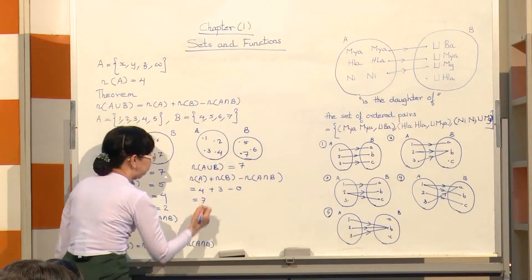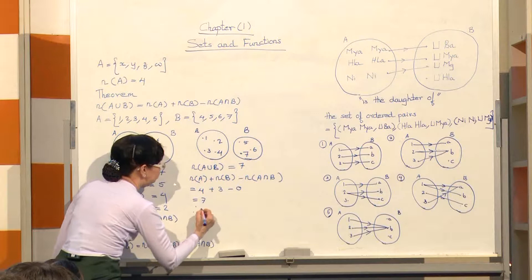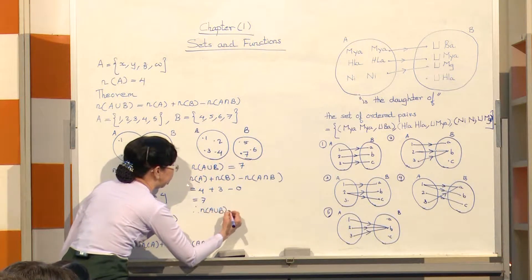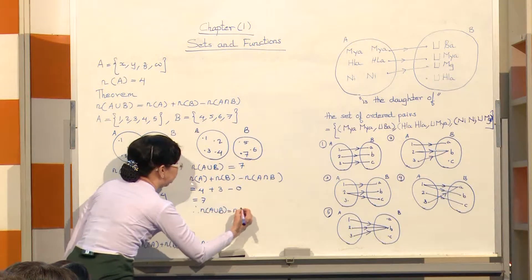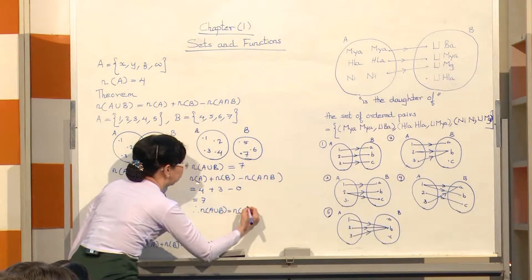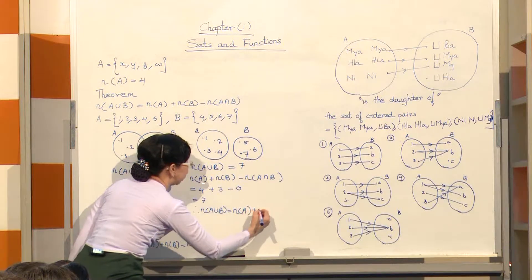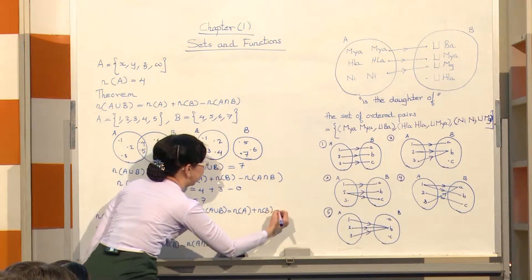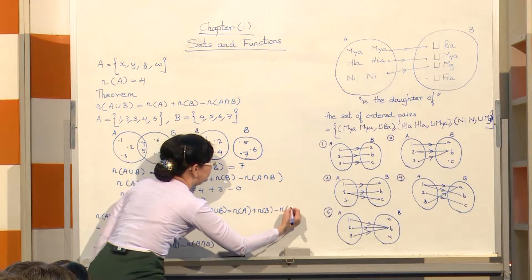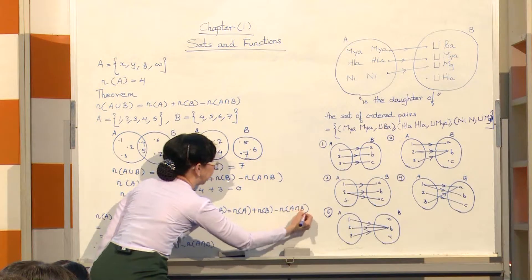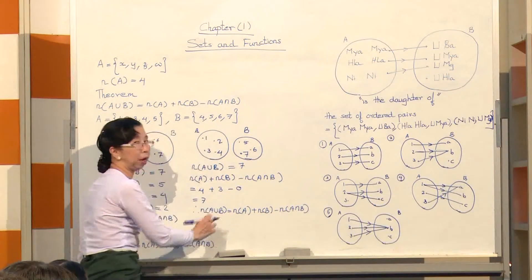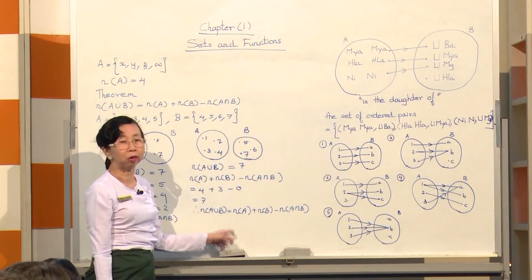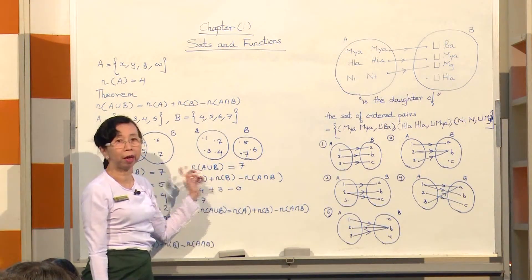Therefore, number of A union B is equal to number of A plus number of B minus number of A intersect B. That is how you have to do it.